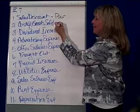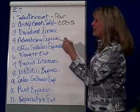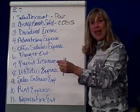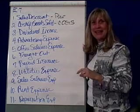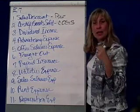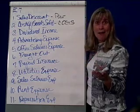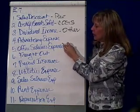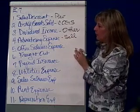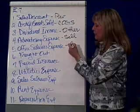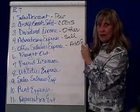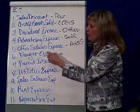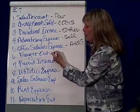Cost of goods sold is cost of goods sold — that's straightforward. Dividend income means you own stock in other businesses and those businesses paid a dividend, so you received dividend income. That's other revenue, not part of your normal business. Advertising expense is a selling expense. Office salaries expense is administrative and general. Freight out — free shipping to customers — is a selling expense, because it's an incentive to make customers want to buy from us.